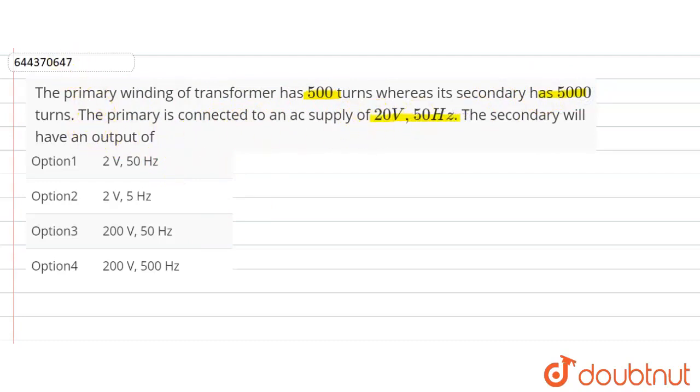So we are given the number of turns in the primary winding, NP, is 500 turns. And the number of turns in the primary winding is given as how much? 500 turns, okay.